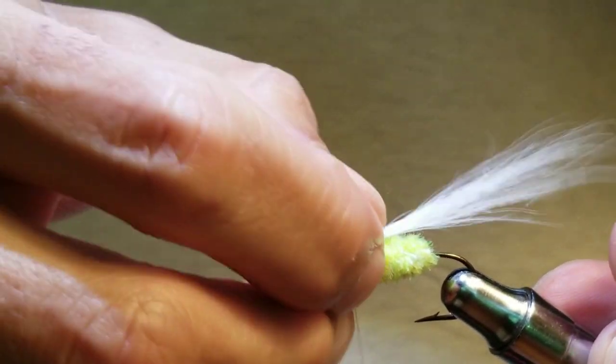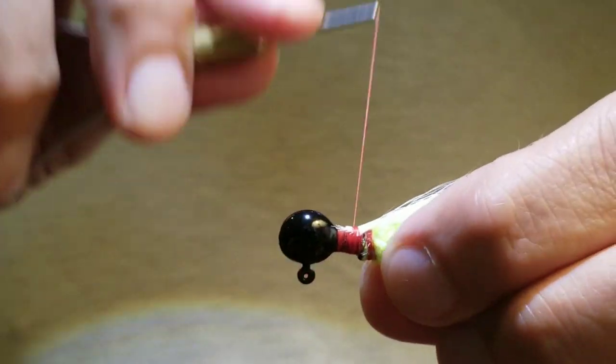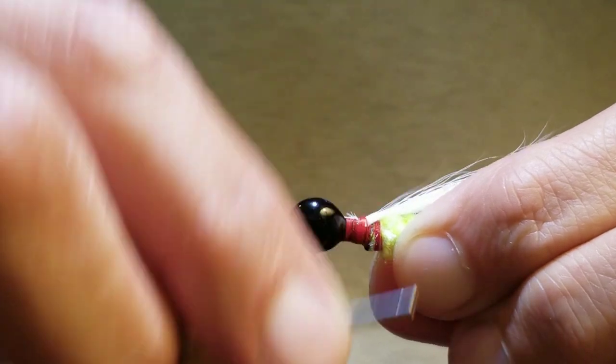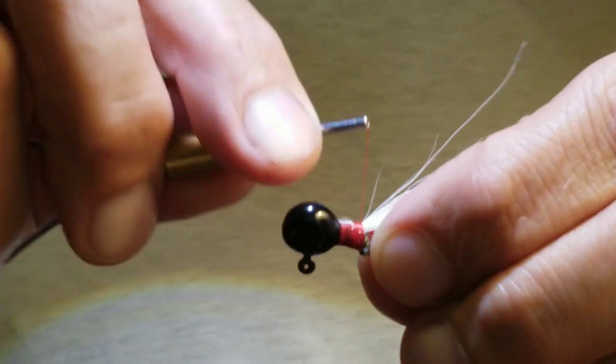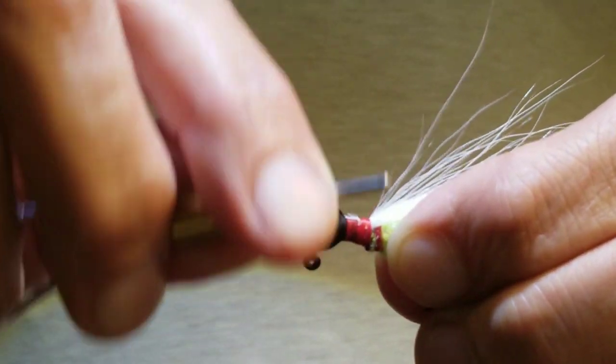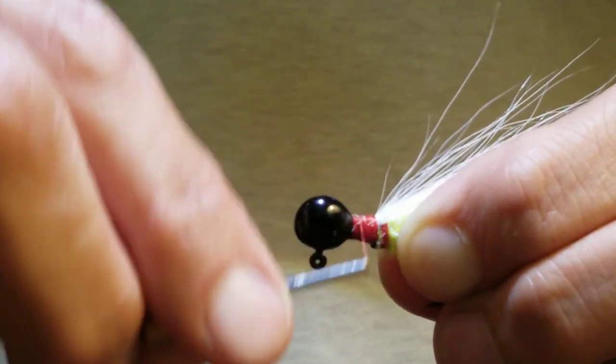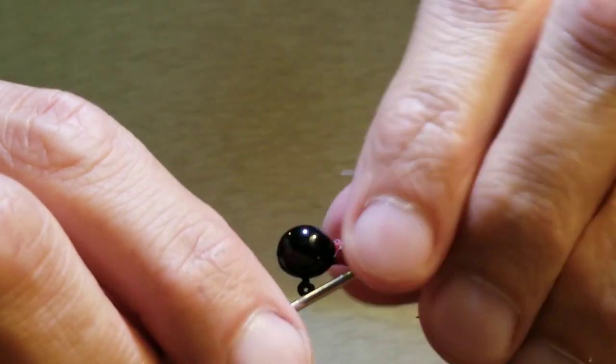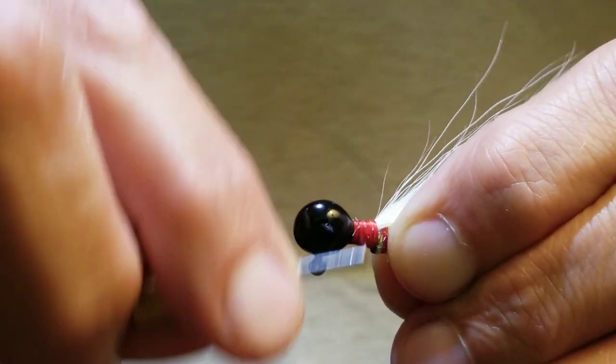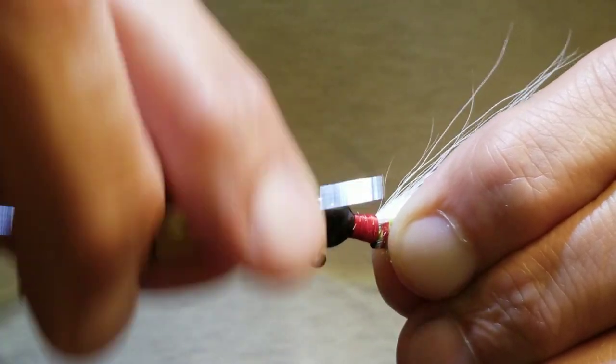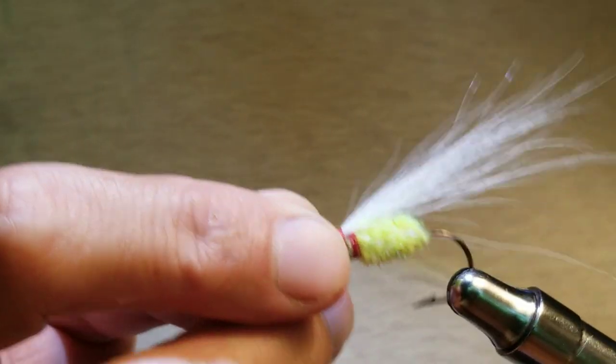Some of your hairs might pull out just like that. Didn't get those fibers in there. Okay, we have the white tied in, so we're going to flip this over and tie the upside.